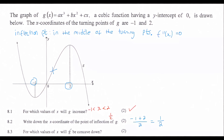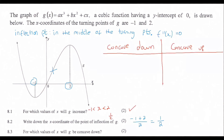Question 8.3: for which values of x will the graph be concave down? Concave down is when your graph looks like an arch facing down. Concave up is when your graph looks like a cup facing up. Mathematically, concave down is when your second derivative is negative, and concave up is when your second derivative is positive.